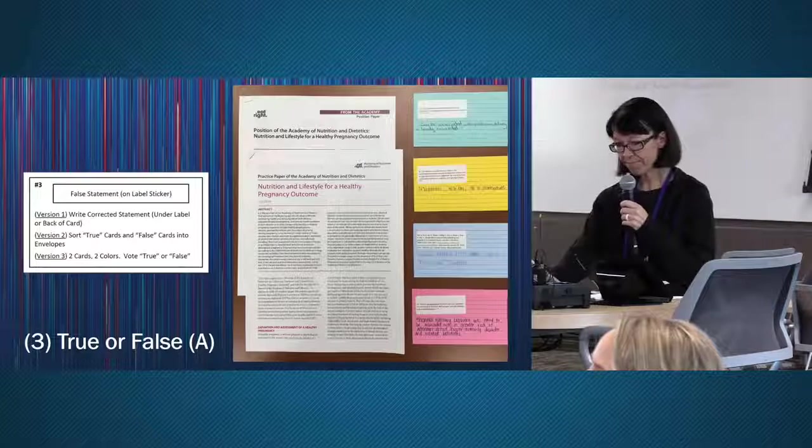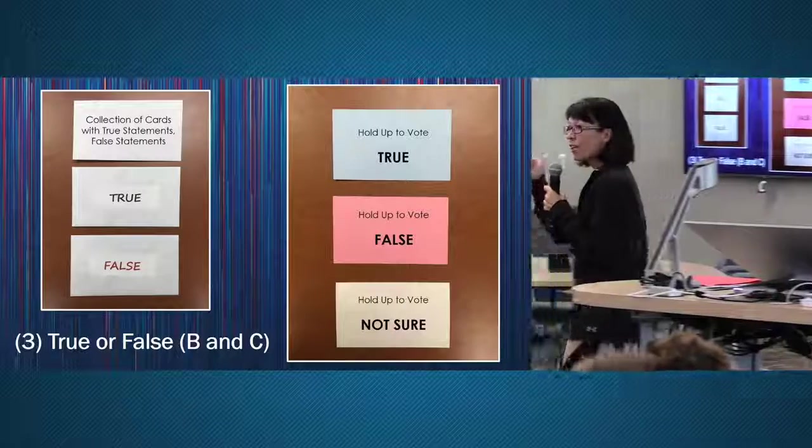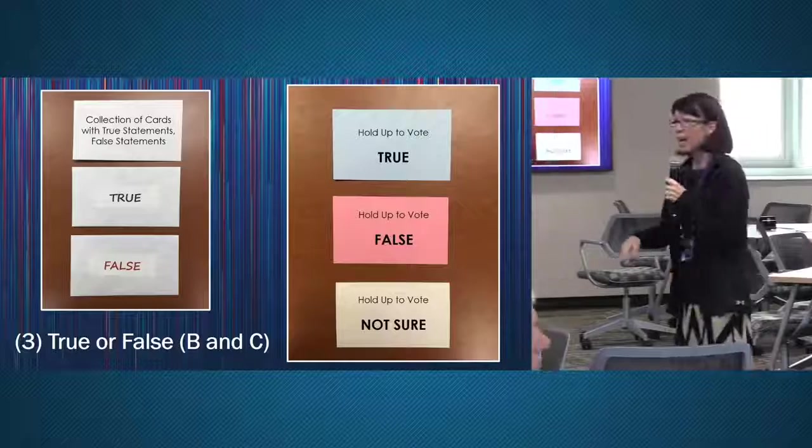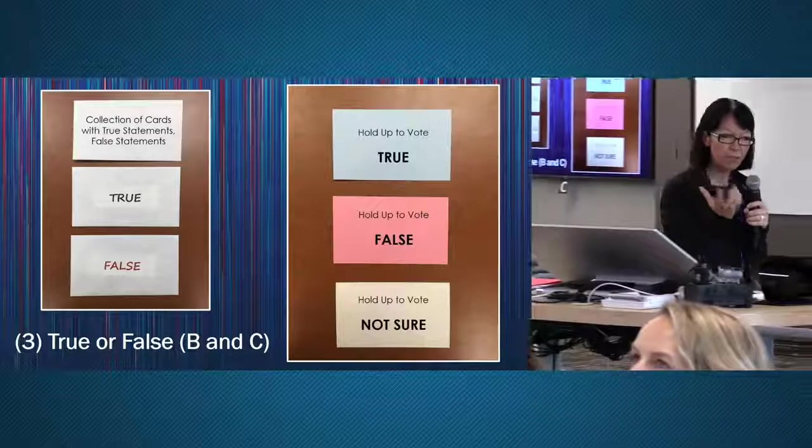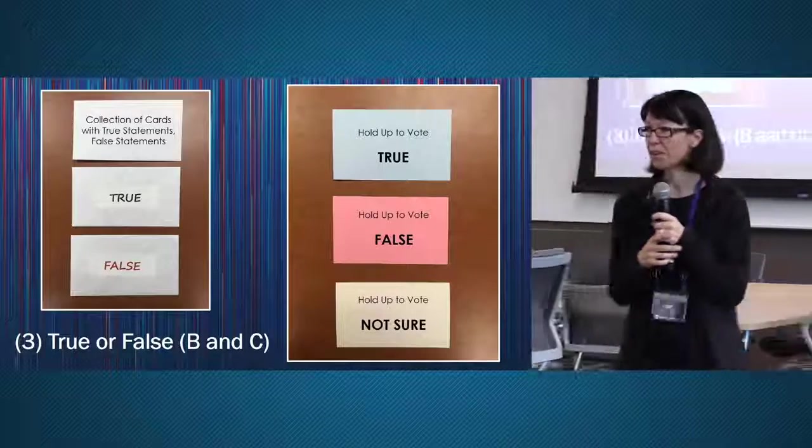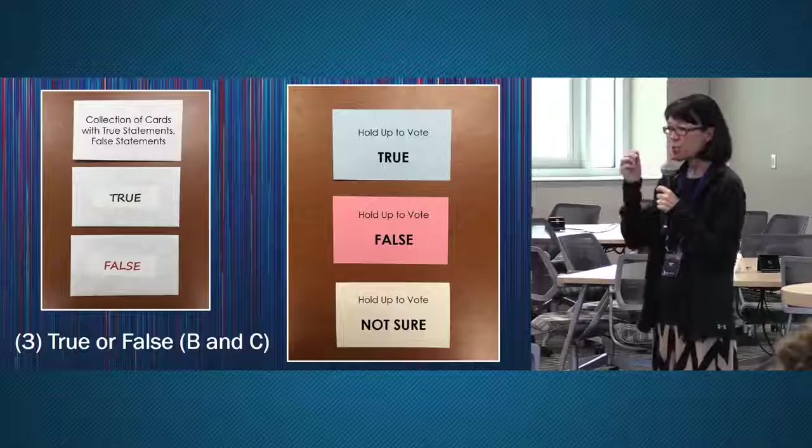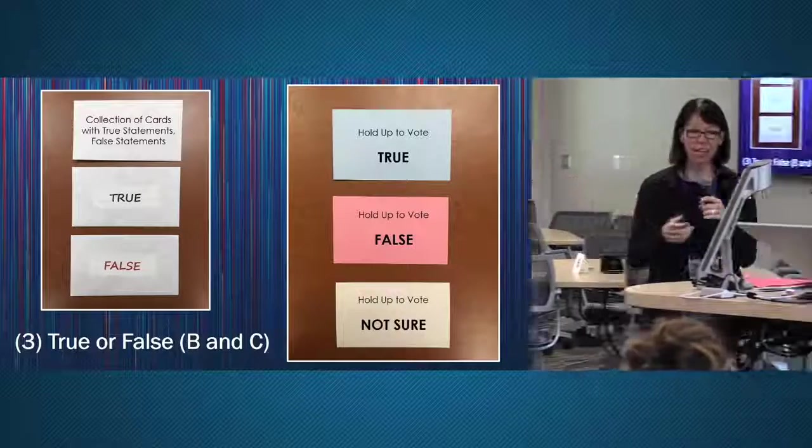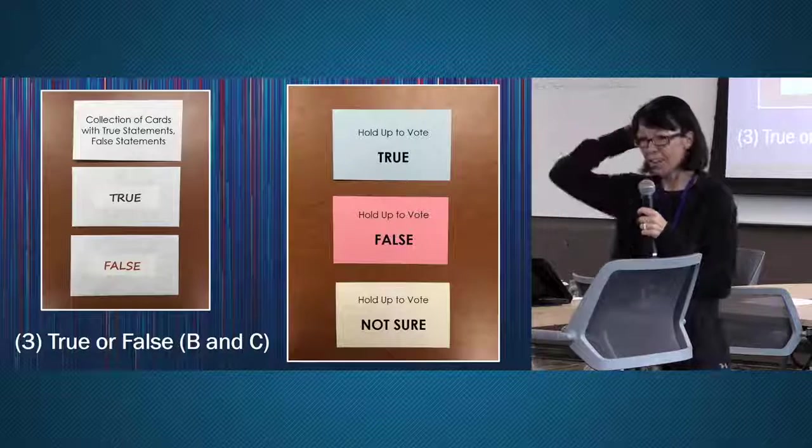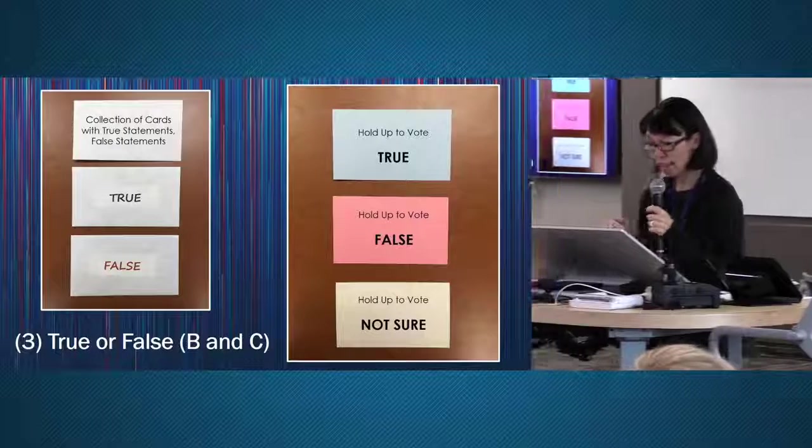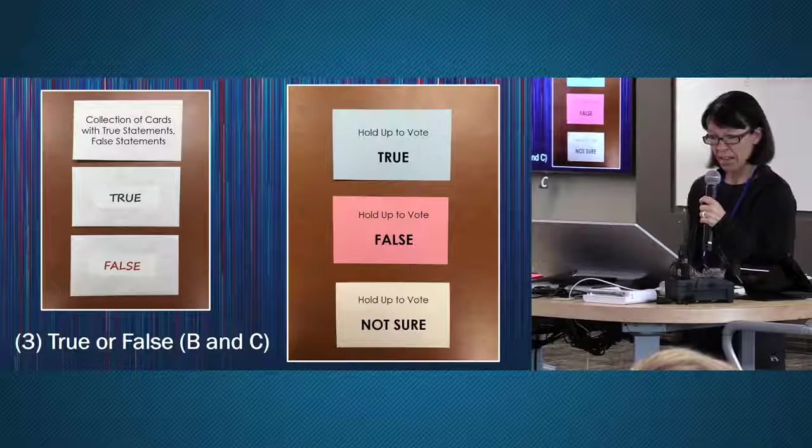A second version, I think there's a picture here, is that I have a collection of cards with true or false statements and then they have two envelopes. And so as a group, they work together to sort those cards and they put all the cards that have a true statement in the true envelope and the ones with the false statement in the false envelope. Or you can give them three cards of different colors. And for every true statement that you read or say in class, then they hold up their card and that's true or false or not sure. And then you can kind of get a visual idea of where they're at. So it's kind of like iClicker, but except they're voting with a card.